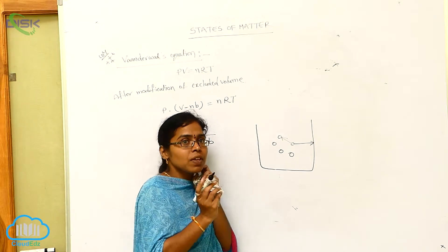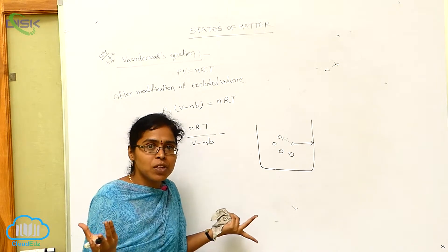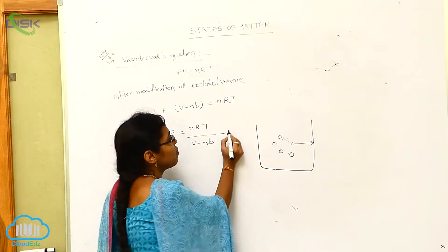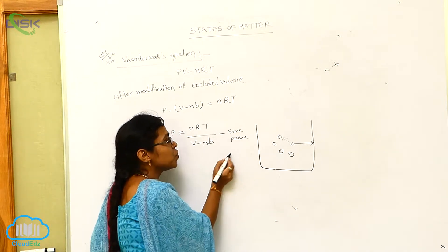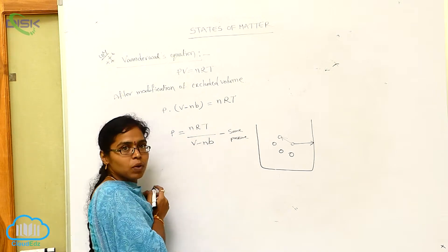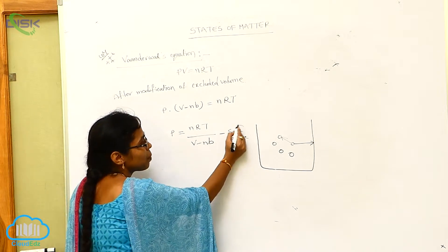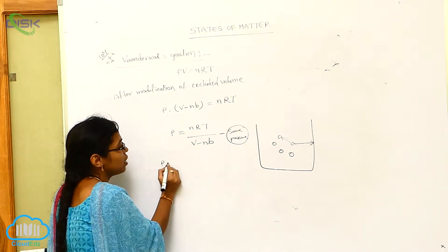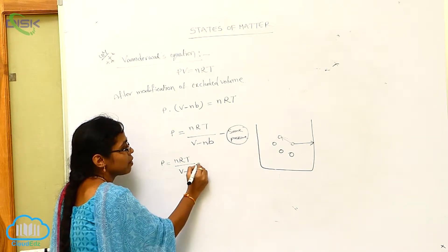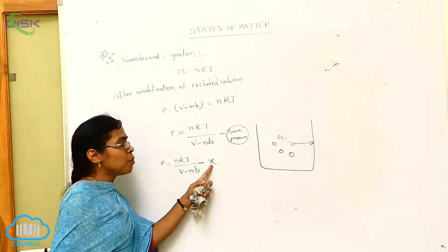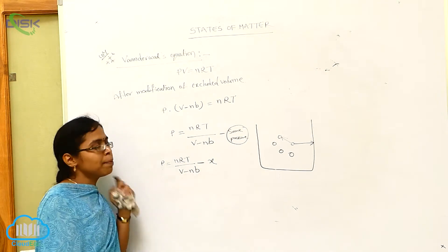This reducing means we can write compulsory a minus. How much pressure is reducing, we don't know. So we can write here some pressure X. Some pressure X is reduced from the actual pressure. So we can write P is equal to NRT by V minus NB minus X. The X amount of pressure is reduced from the actual pressure. So that's why we have to modify the pressure effect.